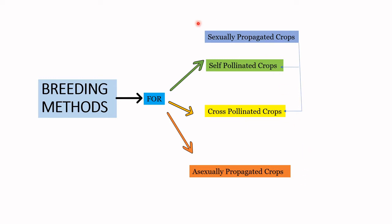Sexually propagated crop plants can be further classified into self-pollinated crops and cross-pollinated crops. The reason we classify breeding methods into certain categories is that they have different levels of creating variation. In self-pollinated crop plants, only 5% cross-pollination is possible; in cross-pollinated crop plants, more than 50% cross-pollination is possible. In asexually propagated crop plants the amount of cross-pollination is less because it takes one to two years to flower and produce seeds. There are some breeding methods that can commonly work on all these categories, which we'll discuss at the end.